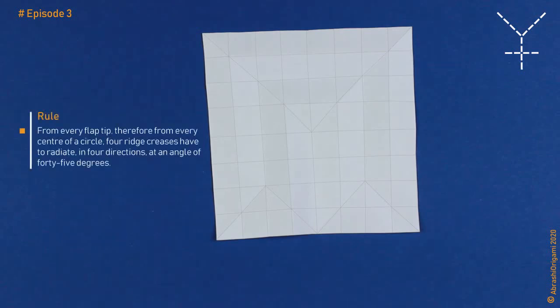So, the rule is as follows. From every flap tip, therefore from every center of a circle, four ridge creases have to radiate in four directions at an angle of 45 degrees. To understand this better, let's take a look at this small polygon. Let's add a circle first.